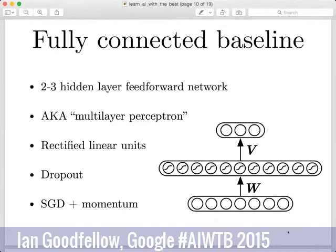If you've decided to use a fully connected neural network for unstructured data, a good baseline as of 2015 is the two-to-three hidden layer feedforward neural network, also called a multi-layer perceptron. You can add more hidden layers later if needed, but start with just one, two, or maybe three hidden layers.